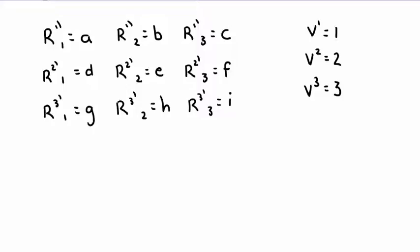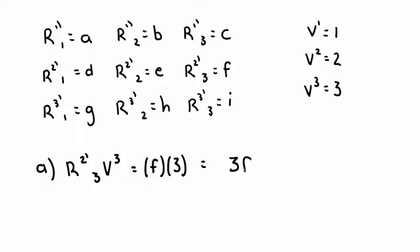Let's go over the solutions. Here, I've explicitly listed each element of the rotation matrix with indices representing their respective rows and columns. I've also listed each element of the vector with its respective index as well. Part A asks for R2'3 V3. All we have to do for this one is look at the lists above and find which elements each representation corresponds to. Looks like R2'3 is F and V3 is 3. So that means R2'3 V3 equals 3F. And that's our answer to part A.